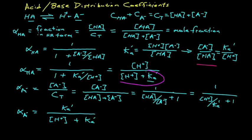You notice that the denominator is the same for both of the alpha fractions. The term in the numerator is a term from the denominator. Here, for the acid form, it's H plus, the first term. For the base form, it's the KA prime.